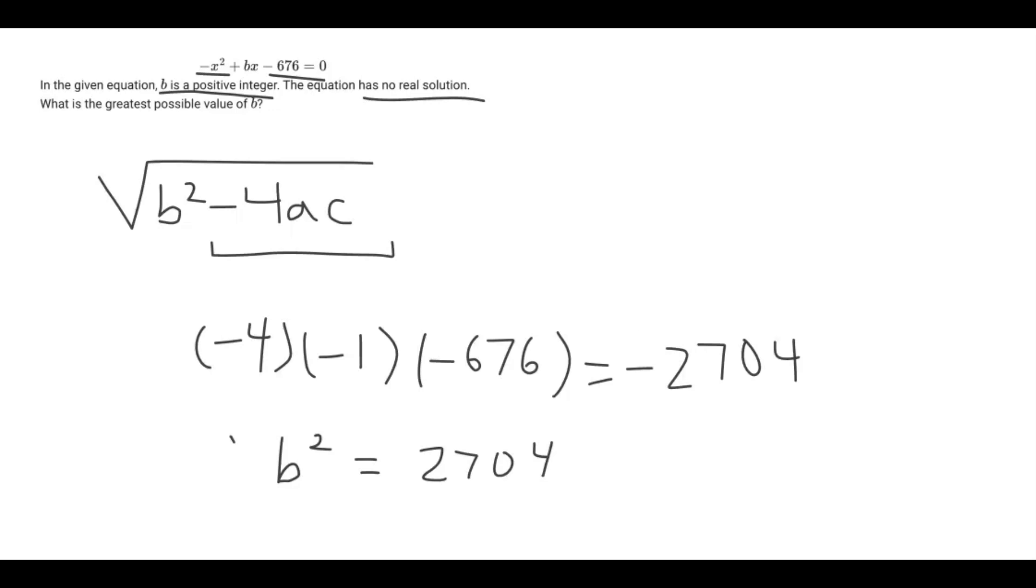Now we're just going to solve for B. We take the square root of both sides. We get B is equivalent to the square root of 2,704, which is oddly equivalent to a whole number, which is 52.